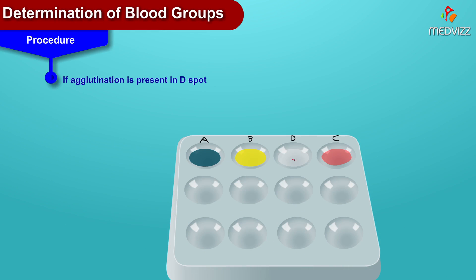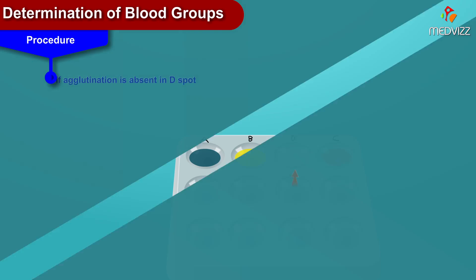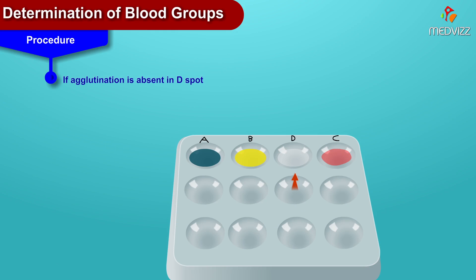If agglutination is present in spot D, then the blood group is Rh positive. If agglutination is absent in spot D, then the blood group is Rh negative.